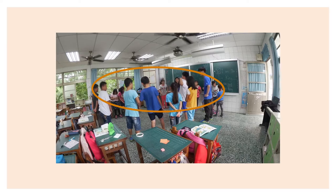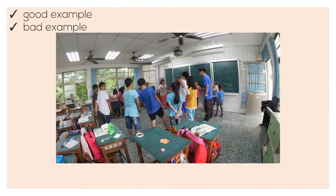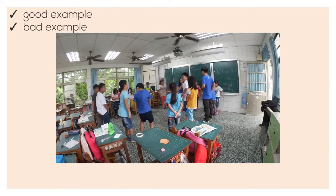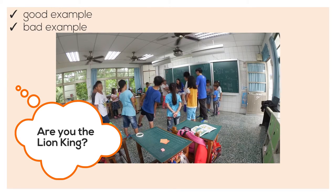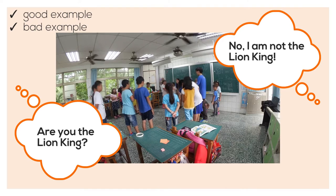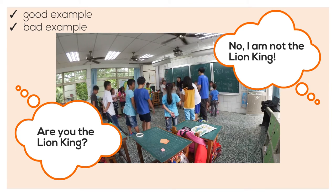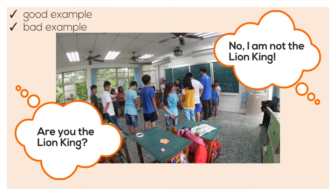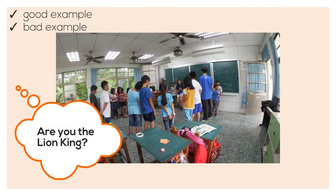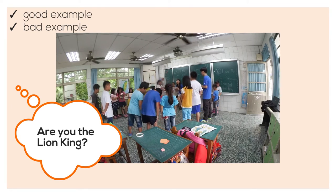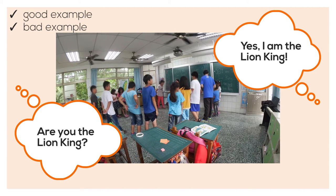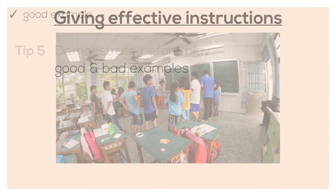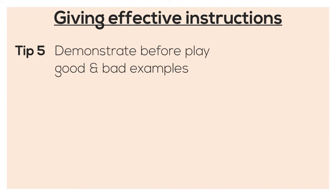One good thing about their demonstration is that they showed good and bad examples. Maybe she will ask Alex: are you the Lion King? Alex will say: no, I am not the Lion King. And maybe she will ask me: are you the Lion King? I will say: yes, I am the Lion King. Remember, even for the simplest games, you should demonstrate what it means to lose as well as what it means to win.